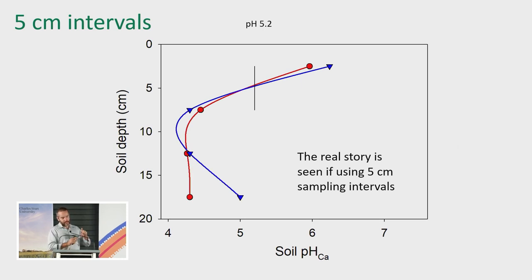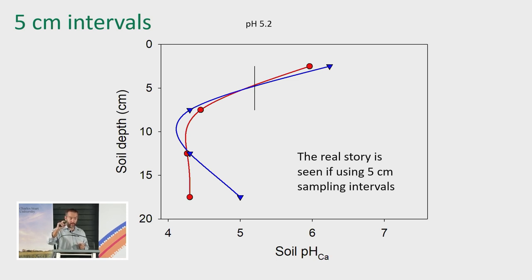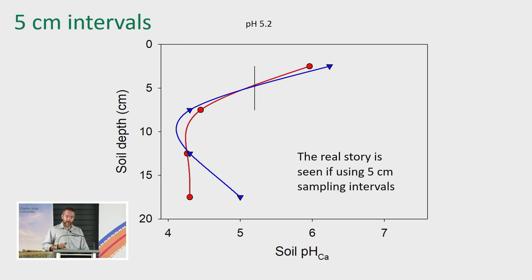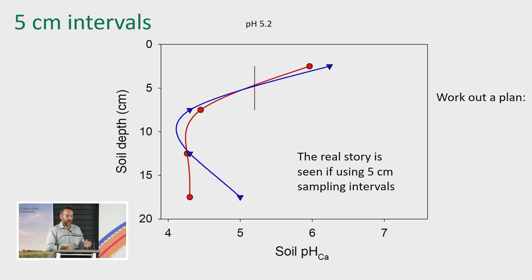We recommend sampling in 5-centimetre intervals to a depth of 20 centimetres, because that gets you the trend in those lines. The blue and red lines have different trends — the blue is trending back towards a higher pH as you go down, telling us the real problem is around that 10-centimetre mark, which is super common in soils. To fix the blue soil, we only need to amend down to about 10 to 12 centimetres to remove the constraint. Whereas the red soil has a problem trending continuously downward, so it's a longer-term management fix because the problem exists deeper in the profile. Getting 5-centimetre intervals to 20 centimetres gives us that definition and shows how we're trending.